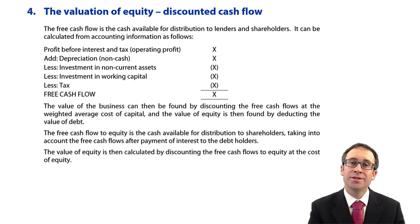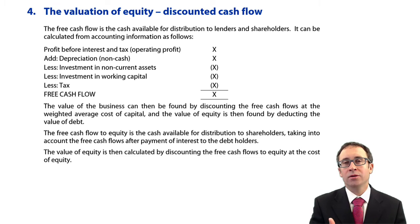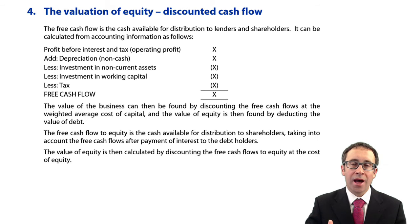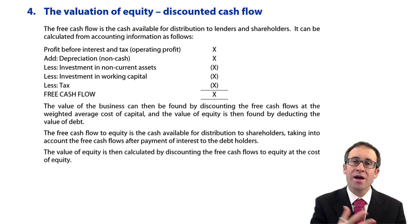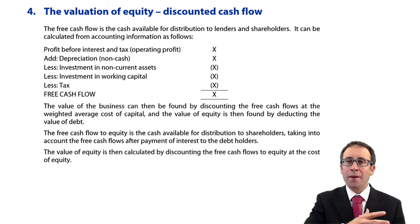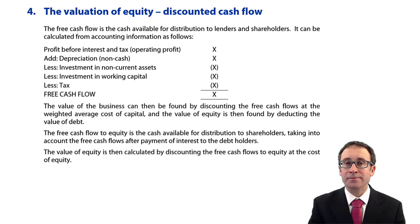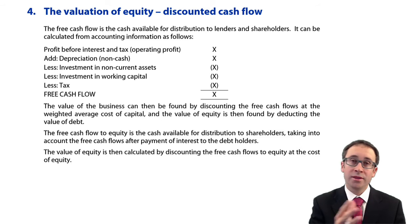Having gone through the previous sessions and looked at the dividend valuation model to value our equity — first with constant dividends, then with dividends growing at a constant annual rate — we're now going to move things on slightly, still thinking about discounting back to present value to work out the value of equity. But instead of looking at dividends, we're going to look at the cash flows that the entity generates.